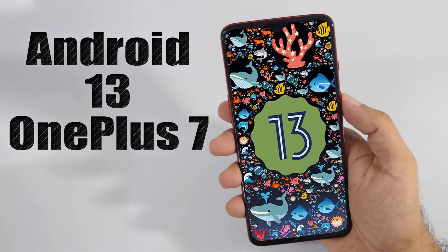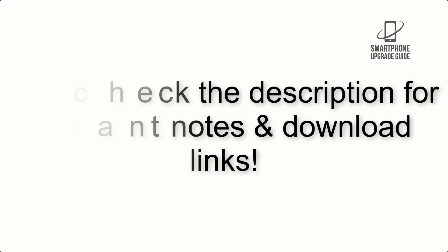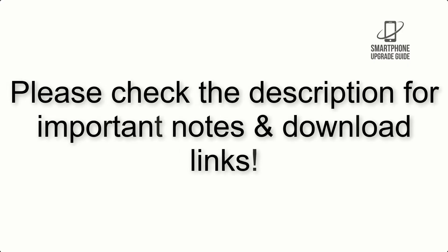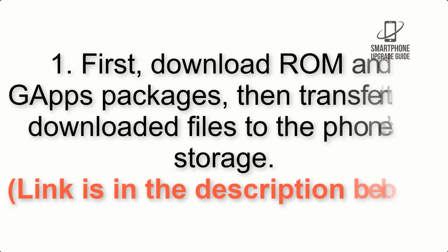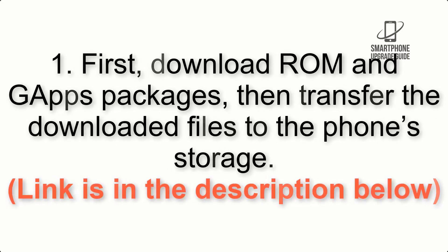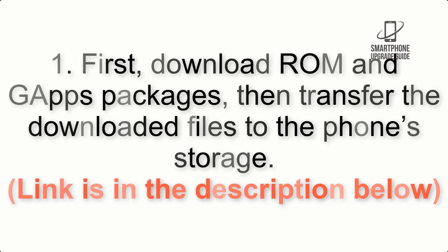Install Android 13 on OnePlus 7 via AOSP ROM. Please check the description for important notes and all download links. First, download the ROM and GApps packages, then transfer the downloaded files to the phone storage. The link is in the description below.